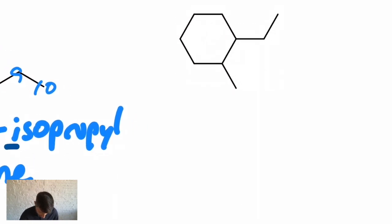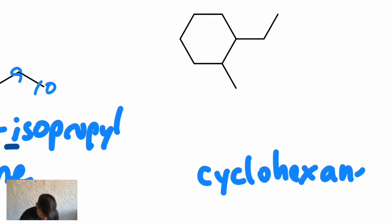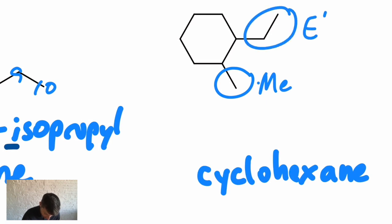And then lastly, our parent chain is the ring, the cyclohexane ring. So the name is going to end in cyclohexane. And then we have two branches: we have a methyl and we have an ethyl.